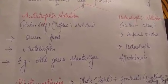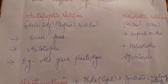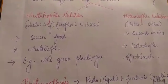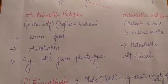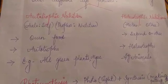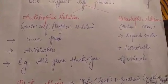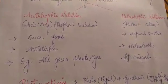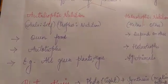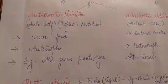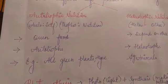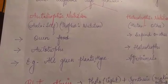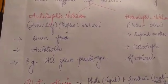Autotrophic nutrition means the mode of nutrition in which organisms prepare their own food by the process called photosynthesis. The organisms which prepare their own food are called autotrophs. Examples are all green plants and algae.